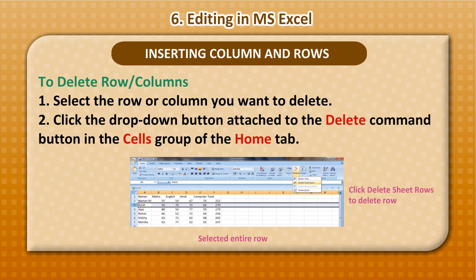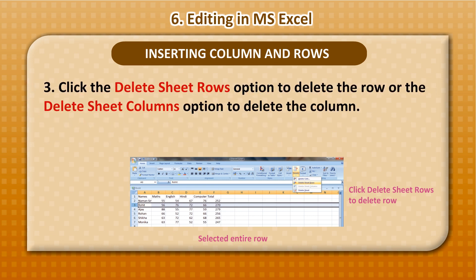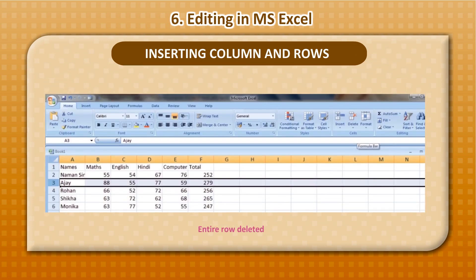To delete rows or columns: Select the row or column you want to delete. Click the drop-down button attached to the Delete command button in the Cells group of the Home tab. Click the Delete Sheet Rows option to delete the row, or the Delete Sheet Columns option to delete the column.